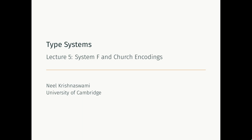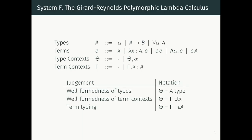Hello and welcome to lecture 5 of type systems. In this lecture we're going to review what we saw about System F in the previous lecture and then put it to work using what are called Church encodings. In the previous lecture we saw System F, which is sometimes also called the Girard-Reynolds polymorphic lambda calculus.